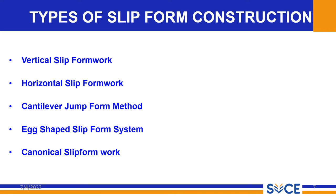Looking at the types of slip form construction, we have vertical slip form construction, horizontal slip form construction, cantilever jump form, x-shaped slip form system, and a podical system. We will see these one by one, starting with the vertical slip form construction.